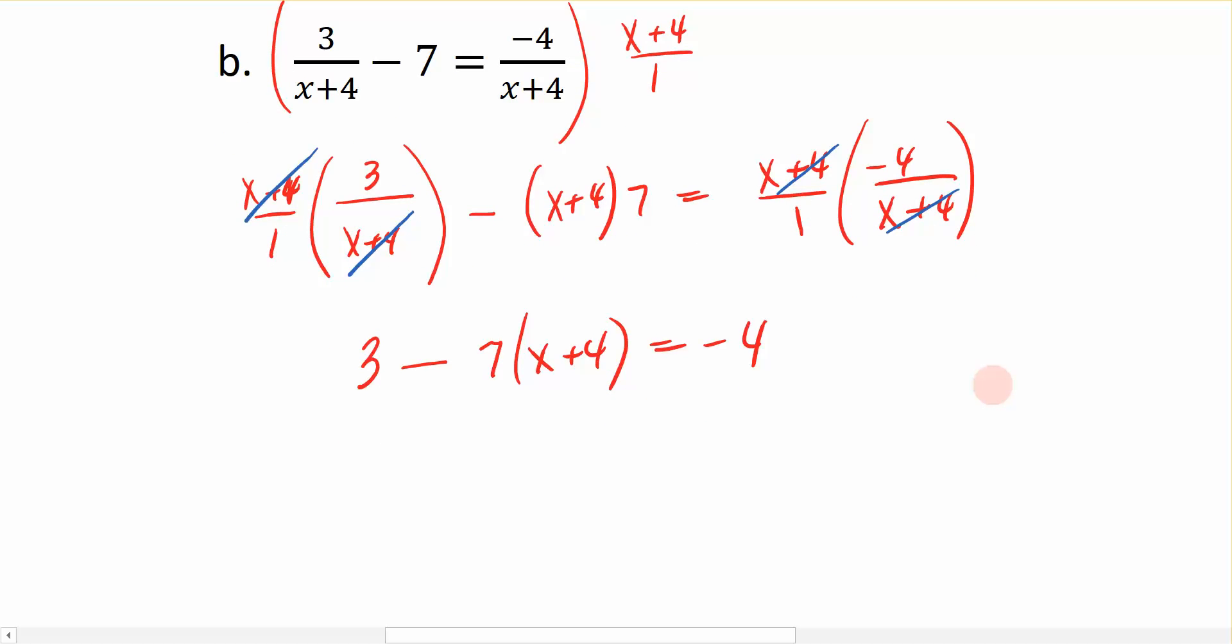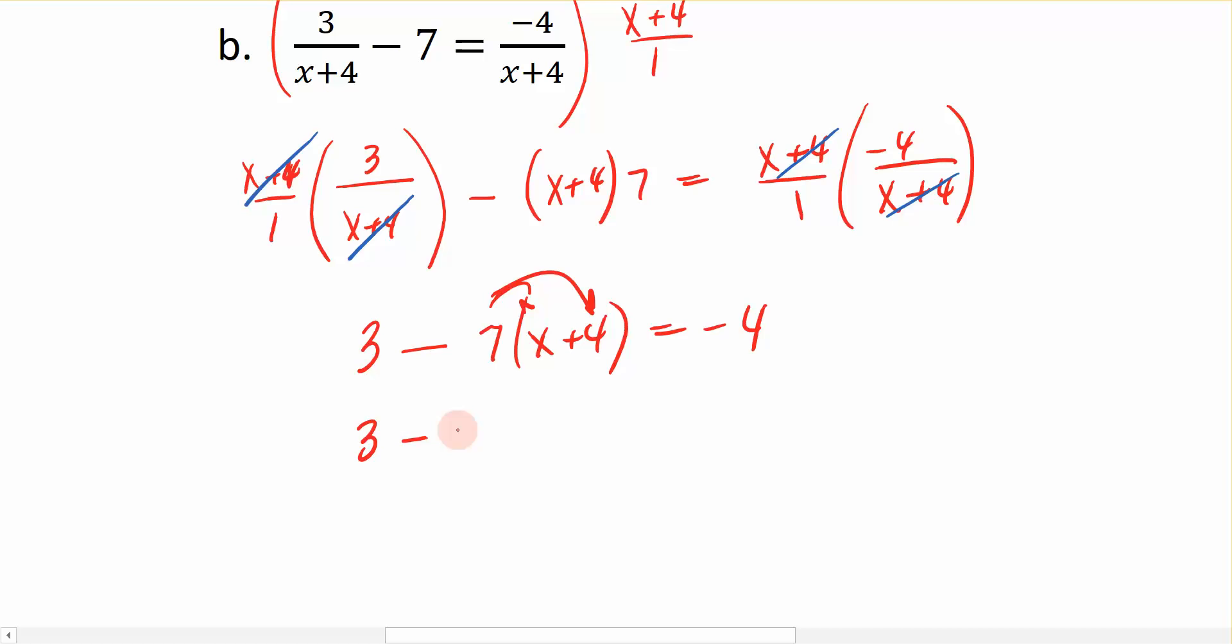So I'm going to distribute to get rid of my parentheses. So I have 3 minus 7x minus 28 is equal to negative 4. Let's go ahead and combine these two terms right here. So 3 minus 28 is going to be negative 25 minus the 7x that I already had, is equal to negative 4.